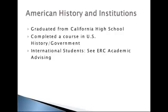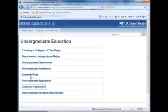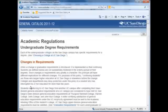The university requires a knowledge of American history and/or government. If you graduated from a California high school, your AH&I requirement is complete. If you attended high school outside California, you can clear the requirement with a comparable course. International students should consult with an ERC counselor to see how they will meet the requirement. In the UCSD General Catalog, under Undergraduate Education and Academic Regulations, you can find a list of courses to satisfy AH&I.